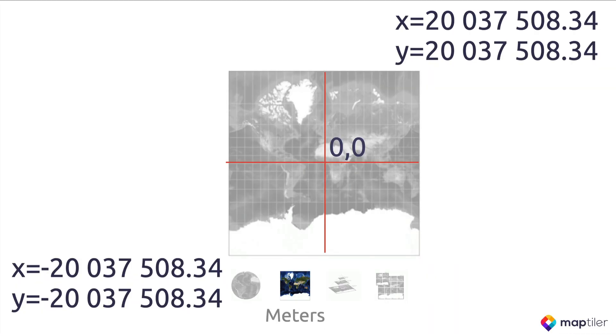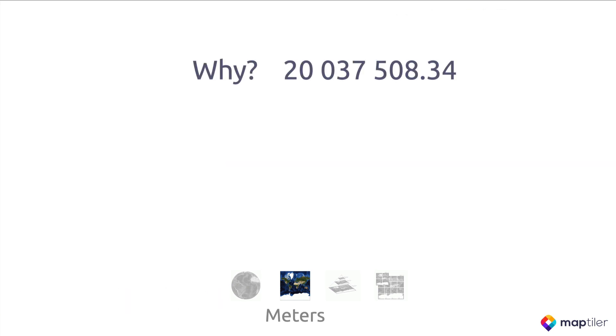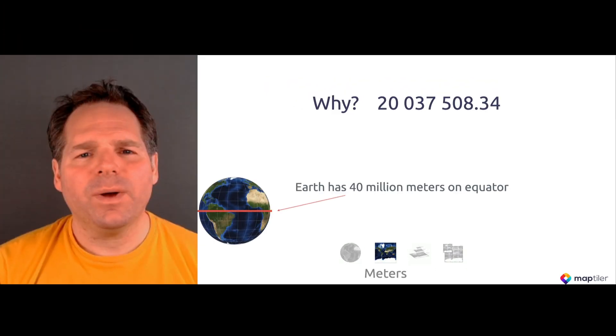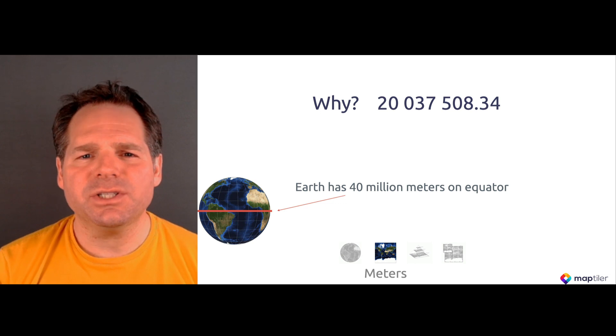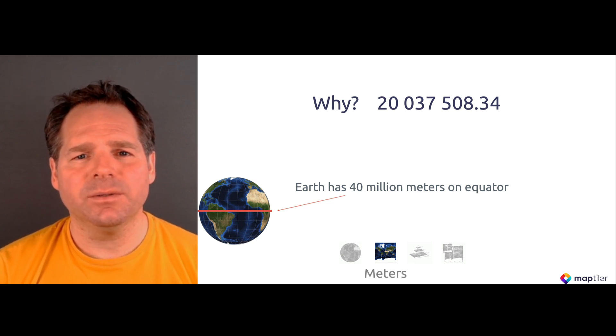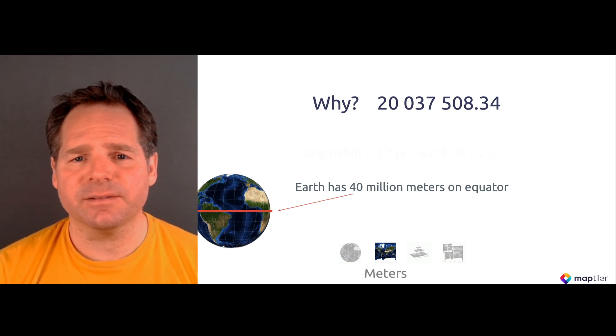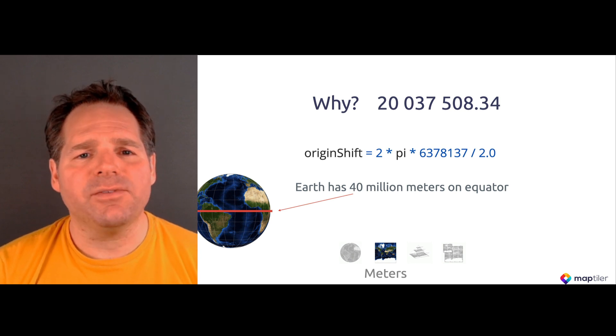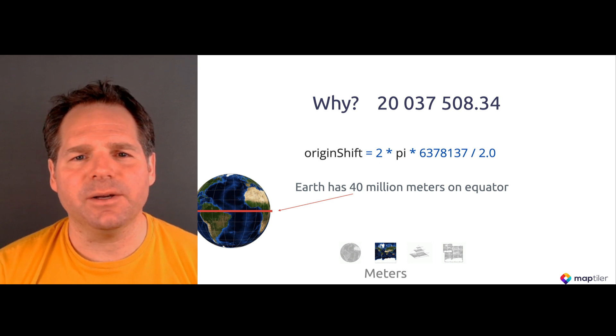The square is divided up using X and Y axes, and coordinates are given in metres with a range of around minus 20 to plus 20 million. Why do we have around 20 million metres in each axis? Well, the equator is just over 40 million metres long, which is the circumference of the Earth. Each axis is half this value in length, creating a grid that stretches from pole to pole and right around the globe.